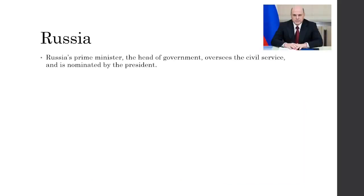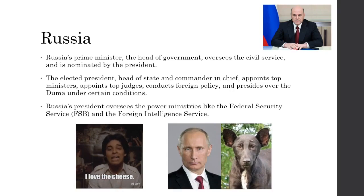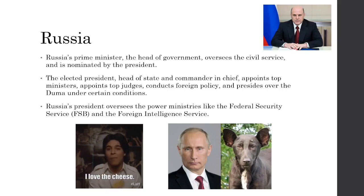In Russia, the prime minister is the head of government, overseeing the civil service, and is nominated by the president rather than elected. The elected president is the head of state and commander-in-chief, appointing top ministers and judges, conducting foreign policy, and presiding over the Duma under certain conditions. The Duma is a house of the Russian Congress, dominated by United Russia members — the same party as the president and prime minister. The president also oversees the power ministries, like the Federal Security Service and the Foreign Intelligence Service.